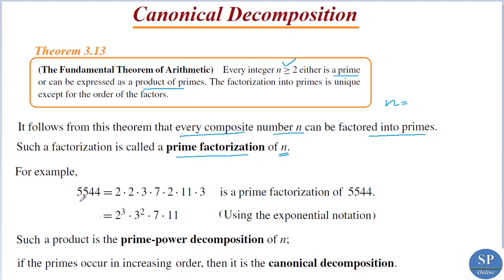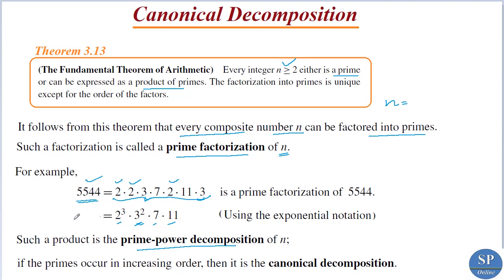For example, if you take the number 5544, it can be factorized into primes like this: it can be expressed as 2 × 2 × 3 × 7 × 2 × 11 × 3. So it is a prime factorization of 5544. If you use exponential notation, we have 2 appearing 3 times so we write 2³, and 3 appears 2 times so 3², then 7 once and 11 once, where 2, 3, 7, 11 are primes. This type of expression is called prime power decomposition of that number.